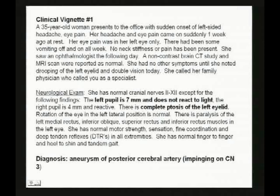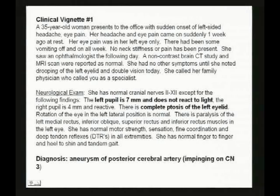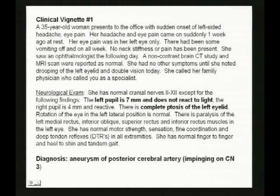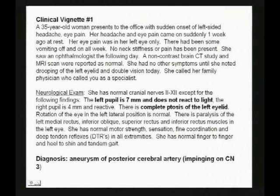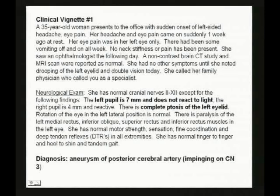Let's take this first clinical vignette, which is a classic. A person comes in complaining about some pain in the eye and headache. On neurological exam, most cranial nerves are fine, but the left pupil is dilated and doesn't react to light. There's also ptosis of the left eyelid. Eye movements, motor strength, arms and legs are fine. Normal finger-to-finger and heel-to-shin cerebellar testing. The main problem is with one eye — a classic aneurysm of the posterior cerebral artery impinging on cranial nerve 3 on the left side.